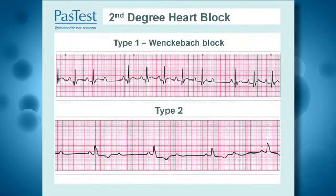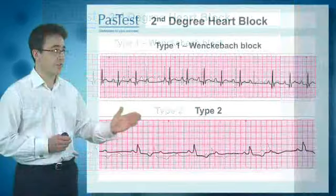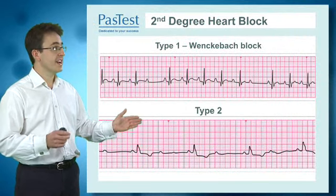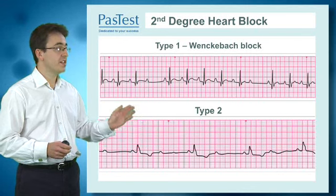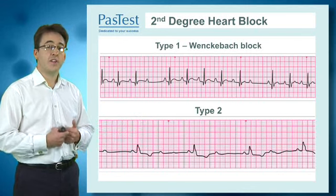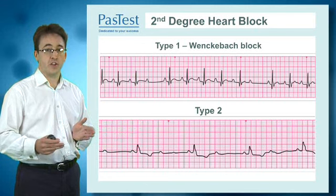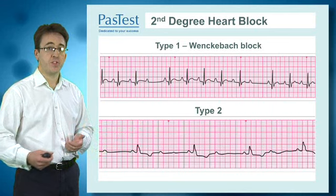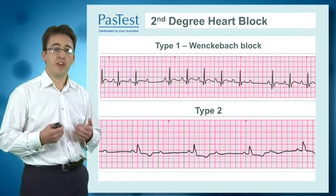Second degree block can be split into two types. Type 1 is Wenckebach, and there's a Type 2. Type 1 Wenckebach has an ever-increasing length of the PR interval. If you look at the middle of this recording, you can see initially the PR interval is short, and then beat after beat it gets progressively longer until the conduction from the P-wave to the next QRS complex gets dropped, and you have a non-conducted ventricular beat. So this is typical of Type 1 or Wenckebach block.